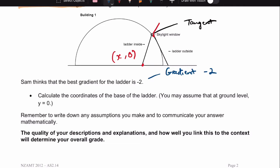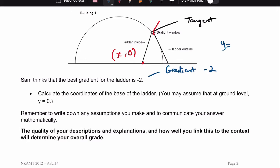Since the standard form of a straight line equation is y equals mx plus c, we can substitute minus 2 into m because m is the gradient. So we get y equals minus 2x plus c. And that's the equation for the ladder outside.